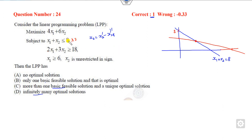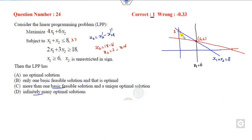You can easily solve them. If you multiply by 2 and then subtract, you will get 18 minus 16. So x2 will be 2, and if you substitute, x1 will be 6. So this point will be (6, 2). Now you can draw the third line: x1 equals 6. Which one is the point of the feasible region? The first constraint is below the line, and the second one is greater than. So the only point of intersection is here. This LPP has only one feasible solution, which is also the basic optimal value.